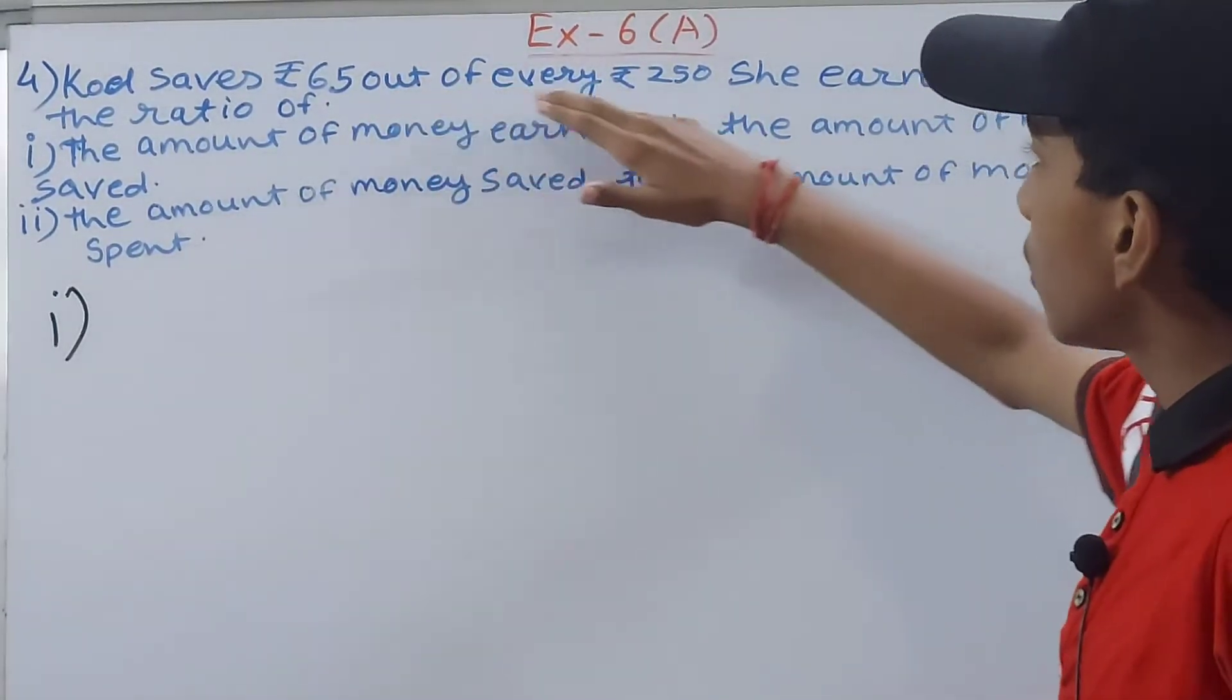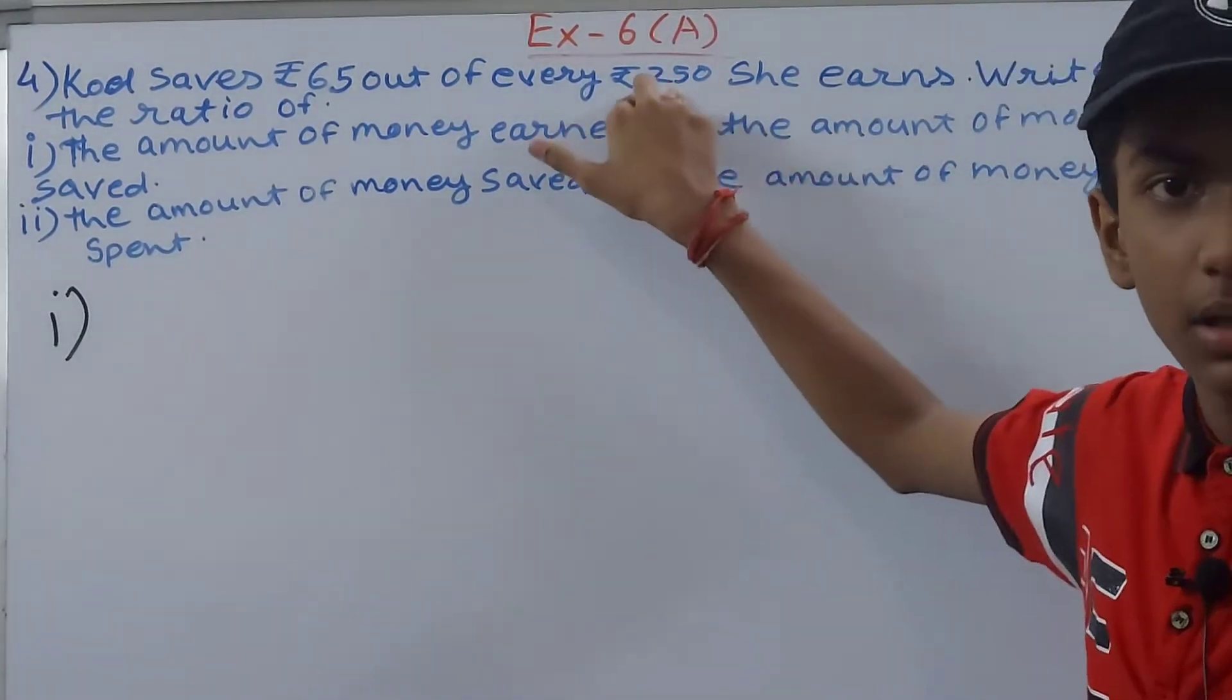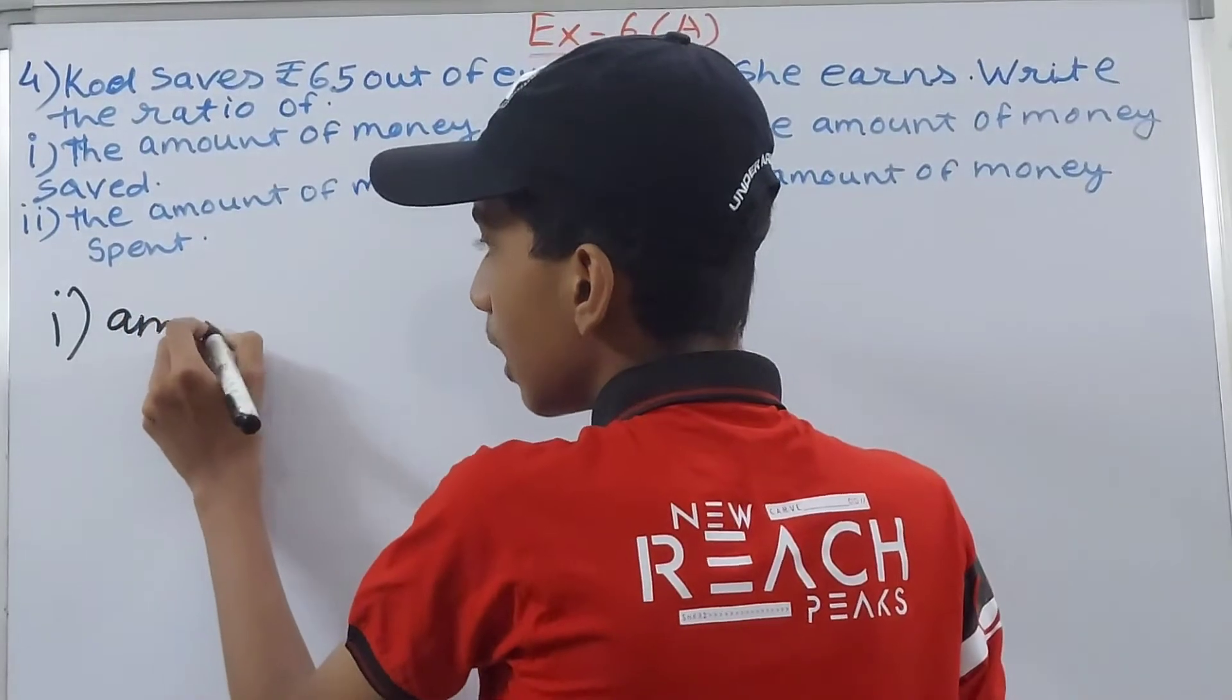65 out of every 250 rupees. She has earned 250. So you write this as amount earned equals rupees 250.